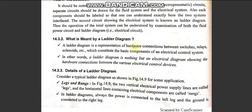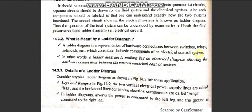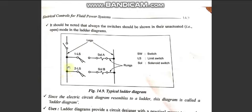A ladder diagram is a representation of the hardware connections between switches, relays, solenoids, and other electrical control devices that constitute the basic components of an electrical control system. In other words, a ladder diagram is an electrical diagram showing hardware connections between various electrical control devices. In the ladder diagram picture, we have two sides called legs, connected horizontally with lines called rungs.